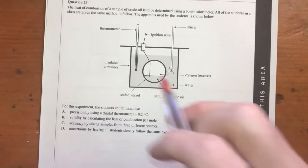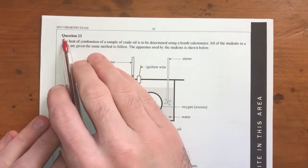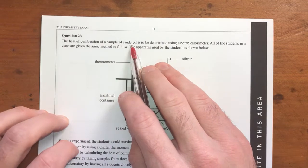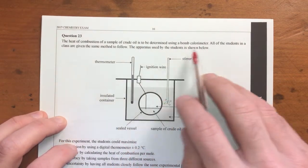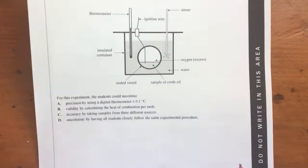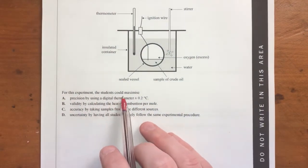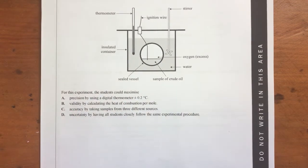I've got the heat of combustion of a sample of crude oil. Hang on, moving back along. Question 23. The heat of combustion of a sample of crude oil is determined using a bomb calorimeter like this dude here. All the students were given the same method to follow. The apparatus is here. For this experiment, the students could maximise precision, validity, accuracy and uncertainty.